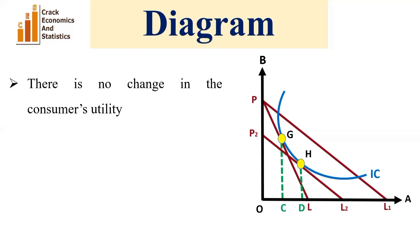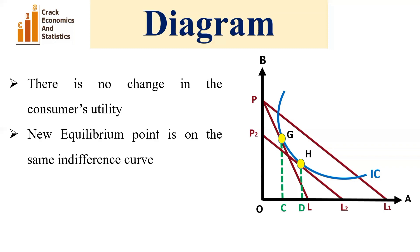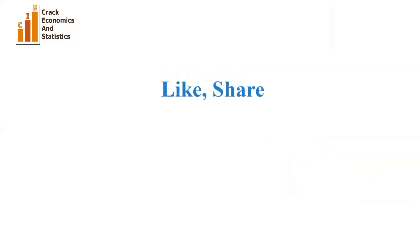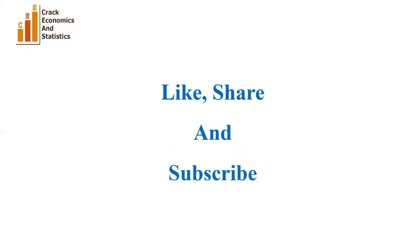There is no change in the consumer's utility because the new equilibrium point H is on the same indifference curve. Since all points on an indifference curve exhibit the same utility, the consumer's utility remains unchanged. This is the idea of substitution effect. If you find this video useful, kindly like, share, and subscribe to our YouTube channel Correct Economics and Statistics. Thank you.